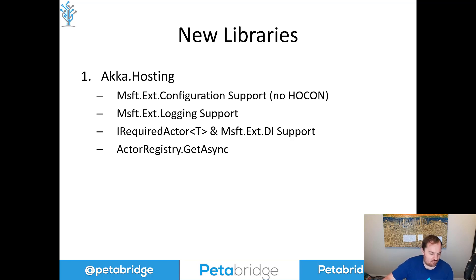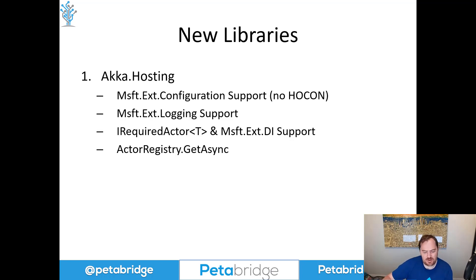And then finally, we also have the Actor Registry, which is our little DI container that powers the required actor behind the scenes. The Actor Registry has a GetAsync method that allows you to await until an actor with a specific key has been added to the registry. This can be really useful for asynchronous scenarios where an actor may not be started right away — it might only be started once it gets some relevant piece of data from some other part of the system. Most of our examples and tutorials are going to be retooled to feature Aka.NET hosting as the primary way of configuring Aka.NET applications going forward.